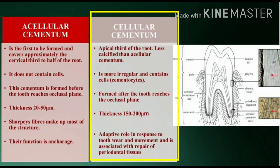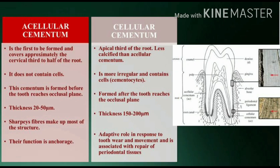Cellular cementum is located at the apical third of the root. It is less calcified than acellular cementum, is more irregular, and contains cells called cementocytes. Formed after the tooth reaches the occlusal plane, thickness 150–200 µm. It has an adaptive role in response to tooth wear and movement and is associated with repair of periodontal tissues.